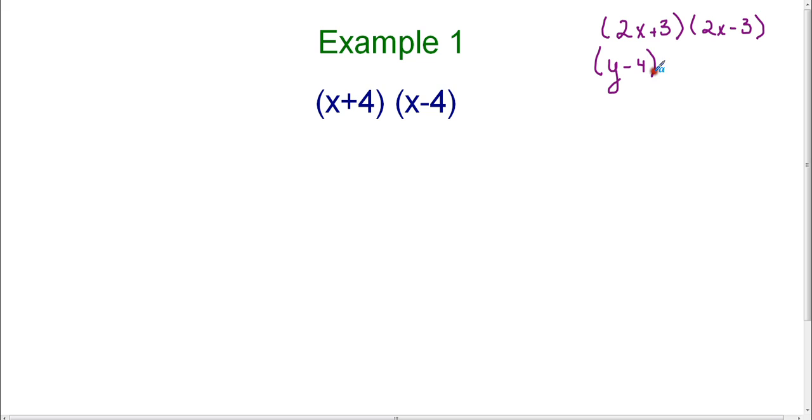You could also have (y-4) times (y+4). Again, as long as they're exactly the same except that one has a plus sign and one has a minus sign, you can use a special rule.